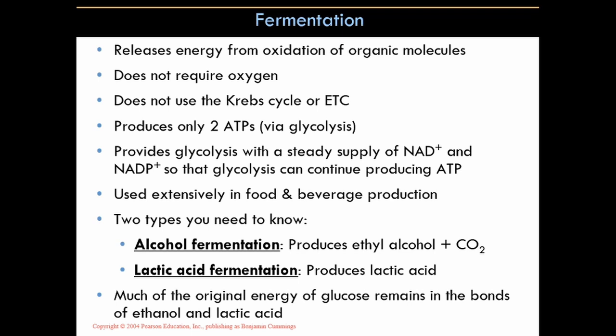An important benefit of fermentation is that it provides glycolysis with a steady supply of NAD+ and NADP+, so glycolysis can continue producing ATP. When glycolysis runs out of NAD+ or NADP+, there's nothing to accept the electrons from glucose and the process shuts down. Fermentation takes the electrons from NADH and NADPH, oxidizes them back to NAD+ and NADP+, and they cycle back to glycolysis, keeping the process going continuously.